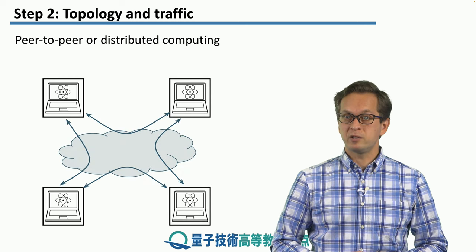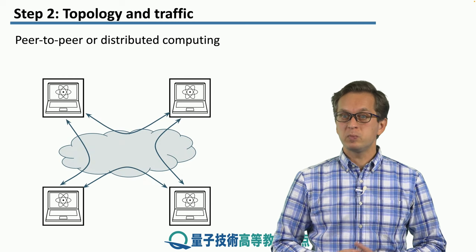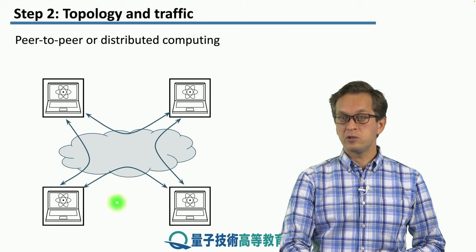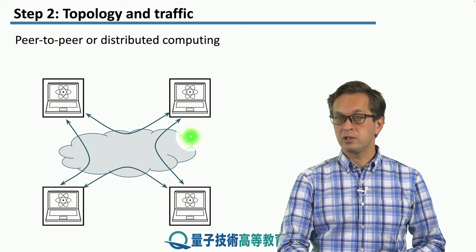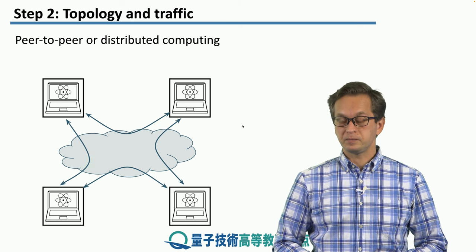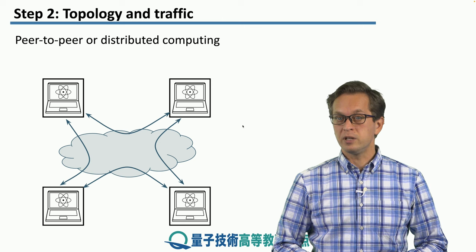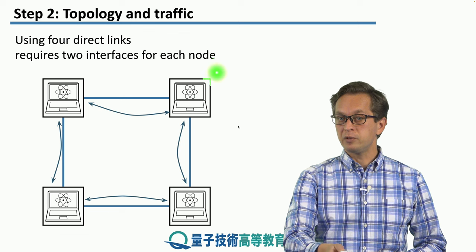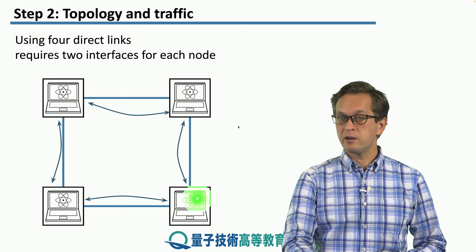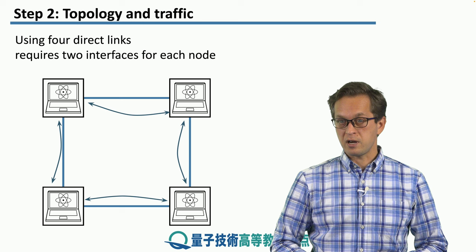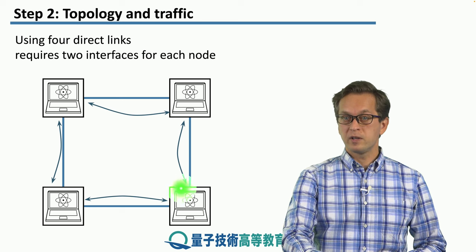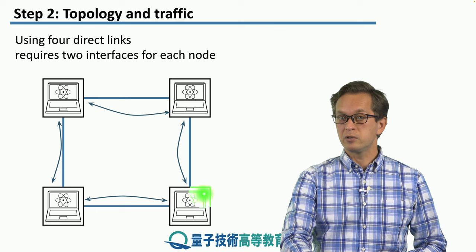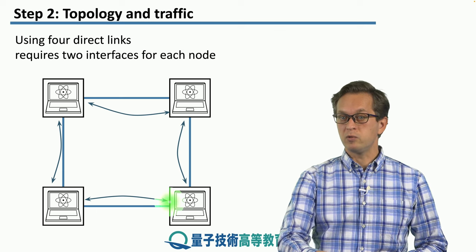Now let's consider a different topology: peer-to-peer distributed computing. We have four clients that are talking to each other through this abstract quantum network. One way of implementing this would be to share direct connections. If we do that, then the quantum network nodes over here and over here require two quantum network interface cards, or QNICs. For example, this node requires a QNIC to connect to its neighbor to the north and to its neighbor to the west.